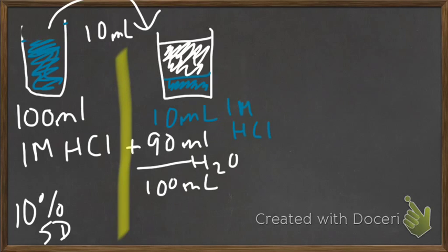Anyways, now, if you look at it, if you add these two up, we still have 100 milliliters in total. But now, instead of having 1 molar HCl, which is what we had before, we have 0.1 molar HCl. Because it's been reduced by 10%.